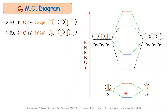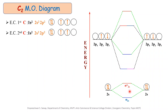When the combination of 2s atomic orbitals takes place, it produces 2 molecular orbitals. The lower energy one is the bonding molecular orbital, denoted by the symbol σ2s (sigma 2s bonding molecular orbital). The higher energy molecular orbital is the anti-bonding molecular orbital, denoted by the symbol σ*2s.